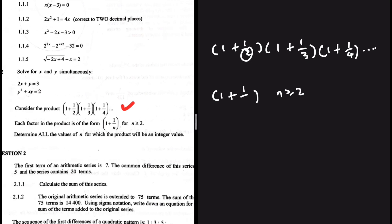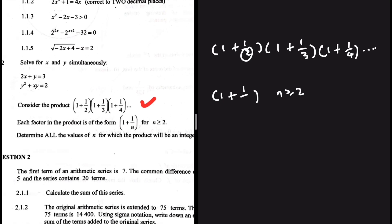And then the question is saying determine all the values of n for which the product will be an integer value. Determine all the values of n for which the product will be an integer value. So this product as it is is very hard to digest but we can change it a bit. Let me show you in what way we can change it.